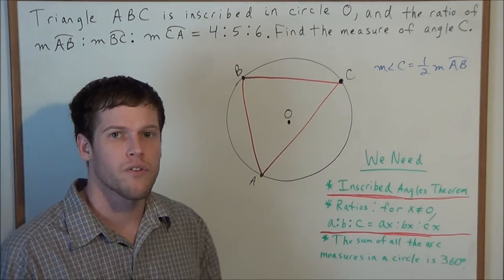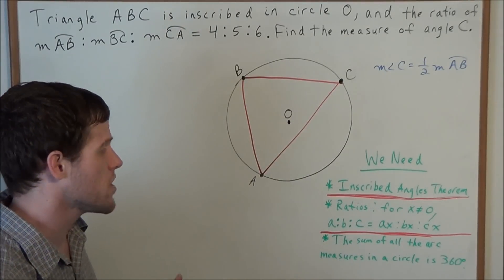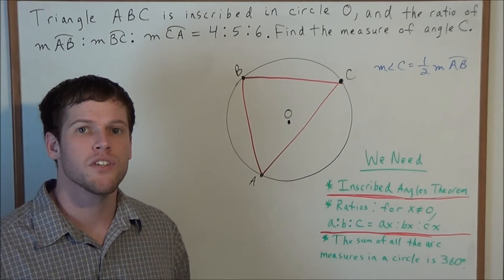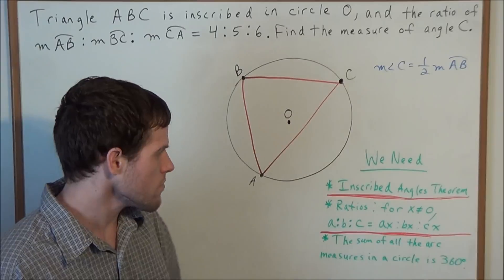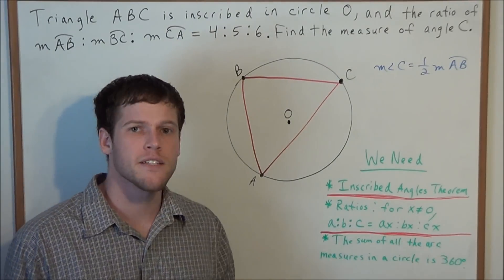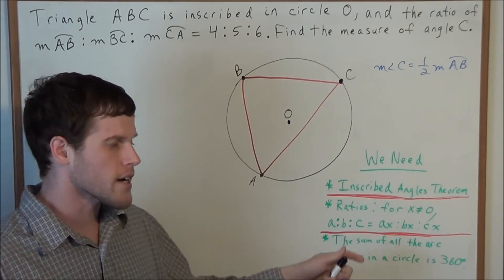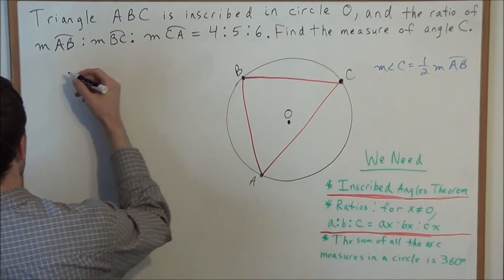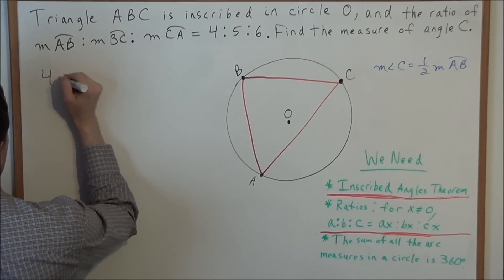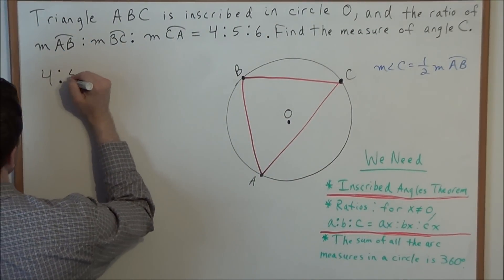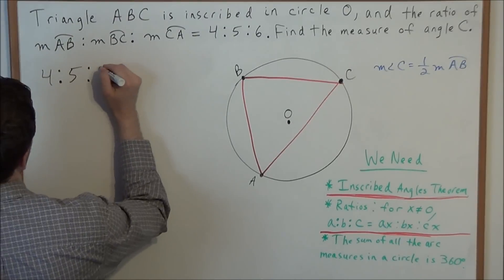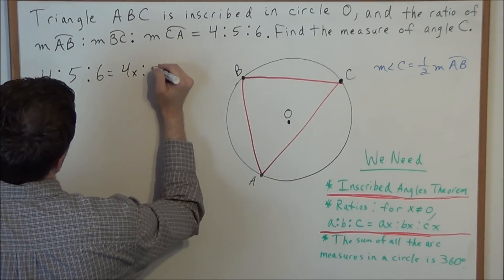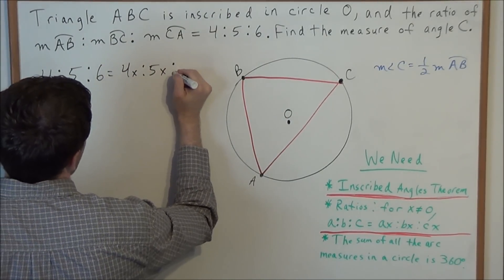Next we need to focus on ratios. In general, when we have a continued ratio A to B to C and a non-zero variable x, we can say that A to B to C equals Ax to Bx to Cx. So that allows us to take the ratio 4 to 5 to 6 and introduce a non-zero variable x, giving us 4x to 5x to 6x.